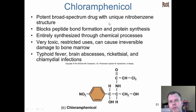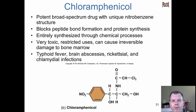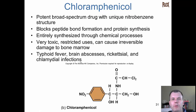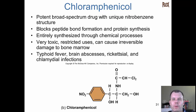Chloramphenicol is another broad spectrum drug. It targets the 50S, not allowing tRNA to bind. The problem is it's very toxic because our mitochondria have 70S ribosomes - it can cause damage to bone marrow and other things. So only in cases where we have severe nasty infections that could be life and death do we use this drug. It wouldn't be given for a simple random infection - it's going to be a life-and-death situation.